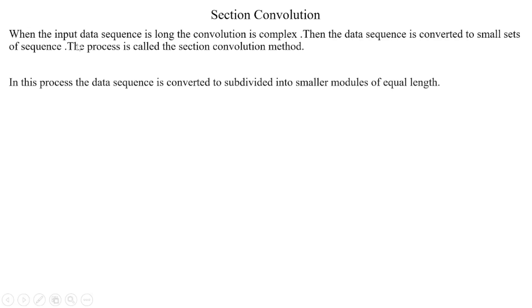When the input data sequence is long, to convolve it is complex. Then the data sequence is converted into a small set of sequences. This process is called the section convolution method.